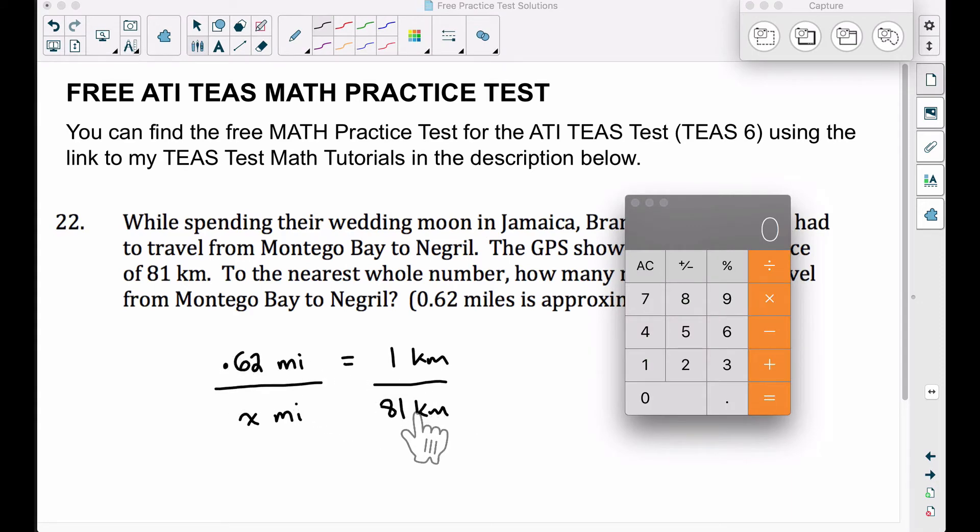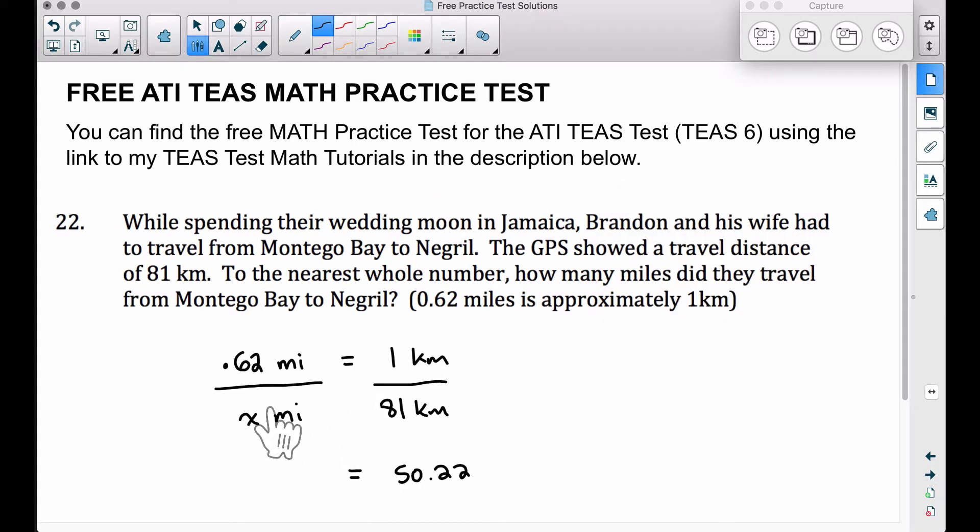Therefore, if we take 0.62 times 81, we get 50.22 is equal to x times one, the other cross product is x. Now, if we round this to the nearest whole number, that's around 50 miles.